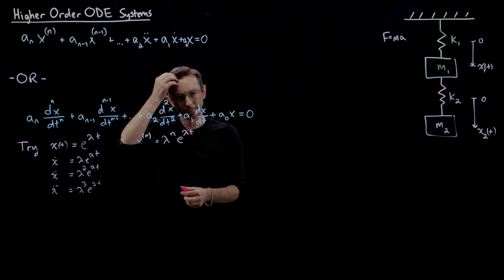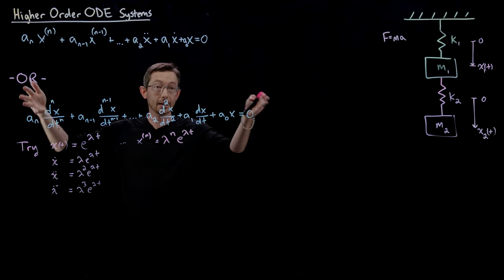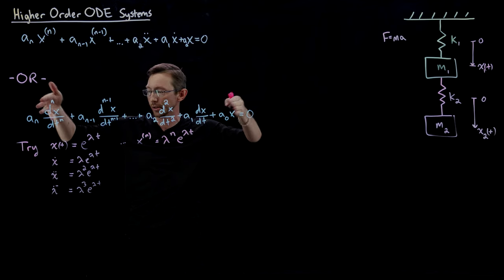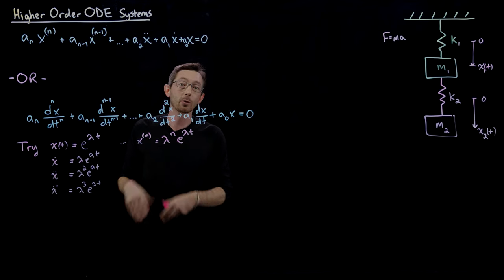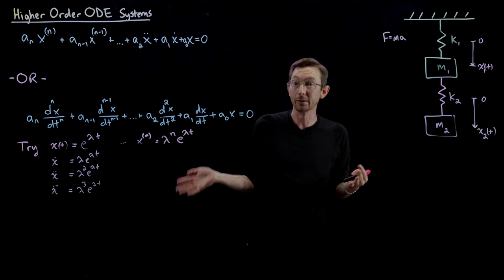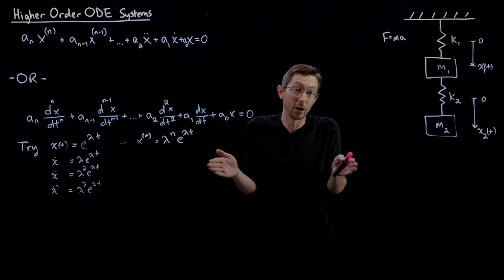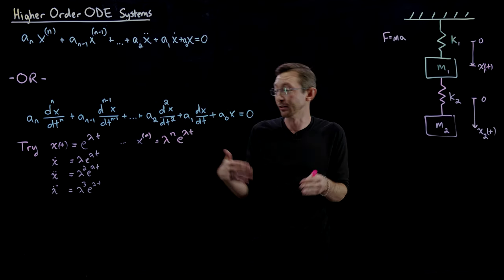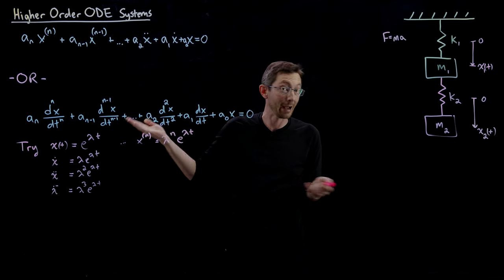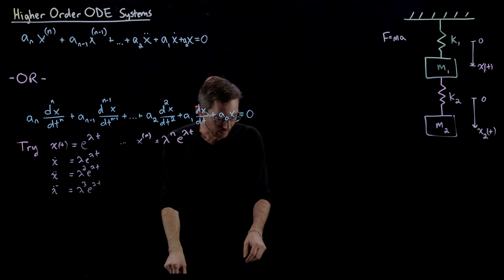So we're going to try that solution and plug it into this equation. These are equivalent equations. And then we're going to derive the characteristic polynomial we've been working with before. But now instead of being a quadratic polynomial, it's going to be an nth-order polynomial because we'll have λ to the power n terms.